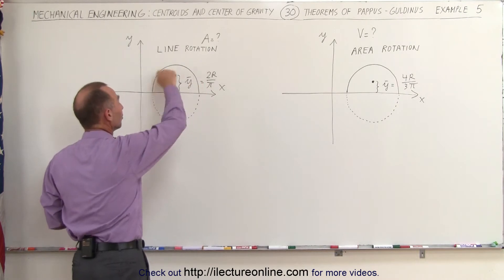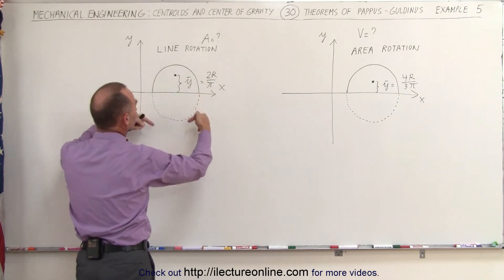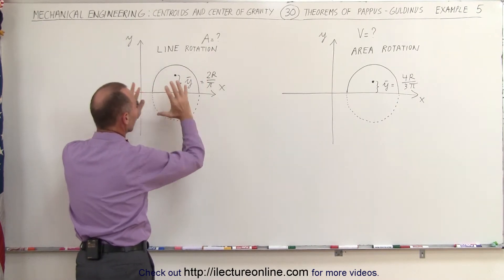If we take a line segment, which is a semi-circle, and we rotate it about the x-axis right here, we are going to get a sphere. We want to know the area of the sphere.